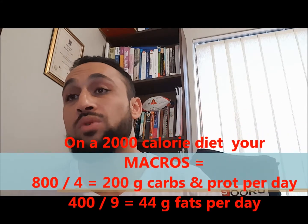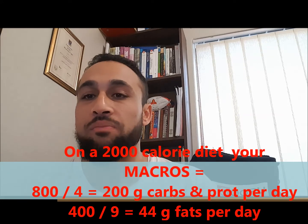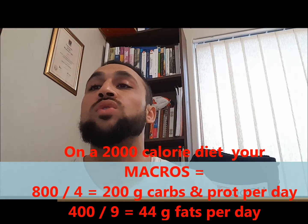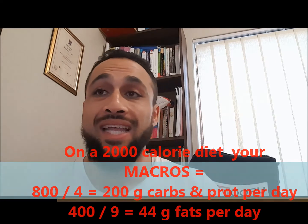For example, on a 2,000-calorie diet using a 40/40/20 split: protein and carbs each get 800 calories. Dividing 800 by 4 calories per gram gives you 200 grams of protein and 200 grams of carbs per day. For fats, 400 calories divided by 9 calories per gram gives you approximately 44 grams of fat per day. I'll post in the future about which types of foods best optimize your diet relative to those macros.